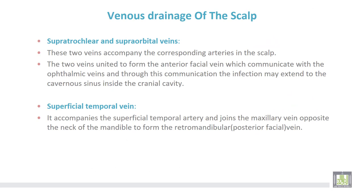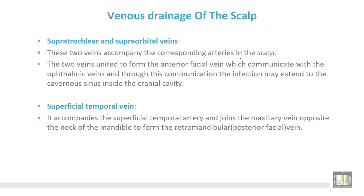The venous drainage of the scalp is formed by the supratrochlear and supraorbital veins, which accompany the corresponding arteries. These two veins unite to form the angular facial vein, which communicates with the ophthalmic veins. Through this communication, infection may extend to the cavernous sinus inside the cranial cavity.